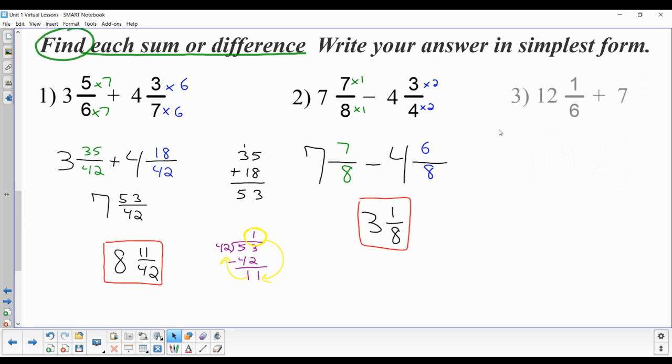I'm going to do one more example that is slightly different because it's not two mixed numbers. It's a mixed number with a whole number. It is 12 and 1/6 plus 7. So I don't have to, but I'm going to make 7 into a mixed number by just making it 0/6.